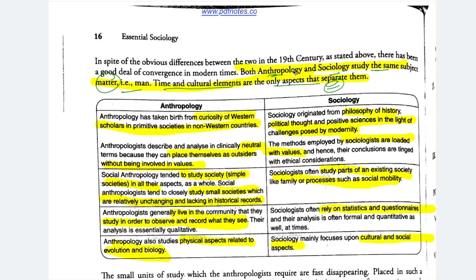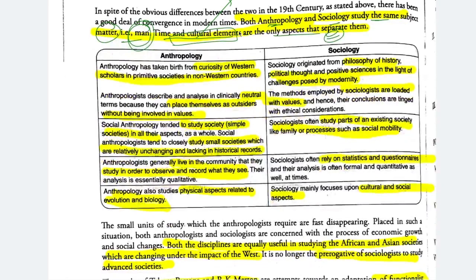Anthropology took birth from the curiosity of Western scholars about primitive society in non-Western countries. They associated modernity with the West, and in non-Western countries there were many primitive societies, which increased their interest. Sociology, on the other hand, emerged from the challenges posed by modernity and from the philosophy of history — the impact of historical events and processes on society.